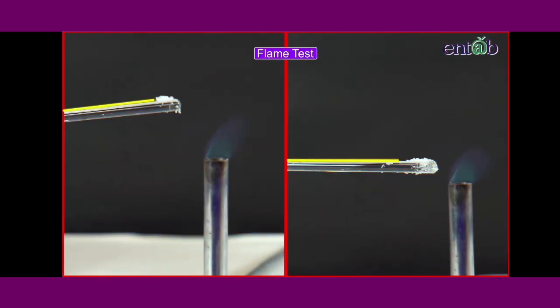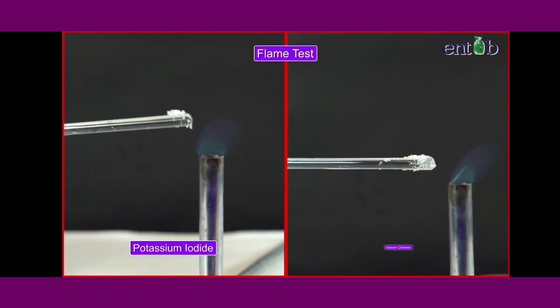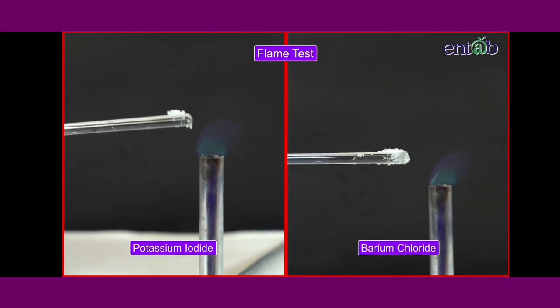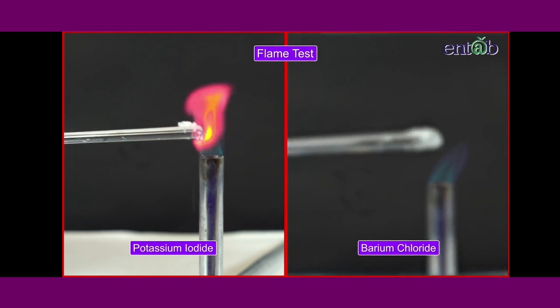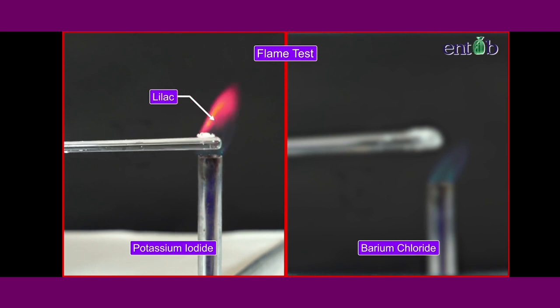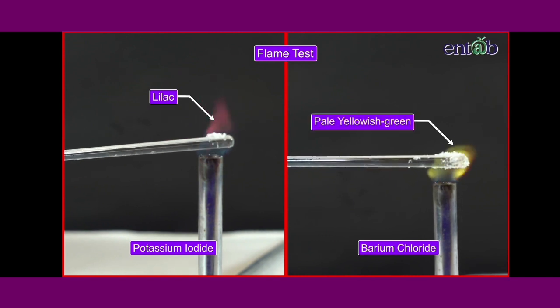With different glass rods, we shall repeat the same activity with potassium iodide and barium chloride. The color of the flame in the case of potassium iodide is lilac and in case of barium chloride is pale yellowish green.